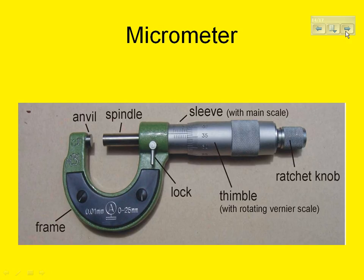The next item we're going to look at is a micrometer. We use this for measuring spheres. You want to place the sphere so its diameter is lined up in the anvil and the spindle. The sleeve is our main measurement and the decimal value will be derived from the thimble. The ratchet is used once you put your sphere in. Tighten down the ratchet to hold it in place — don't tighten it so tight that you're making indentations on whatever object you're using.